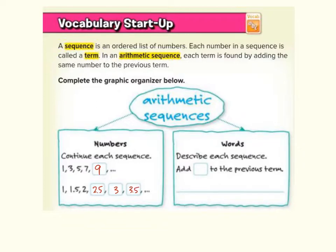So in the words, describe each sequence. What you're doing is you're adding, even though it is odd numbers, you're actually adding 2 to the previous term. Or down here, you're adding 0.5 to the previous term. So make sure you get this written down in your books.